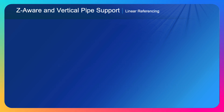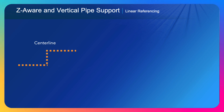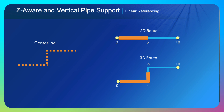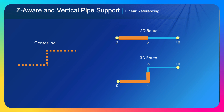We also support the ability to locate measures in Z. In this case, we have a center line that has a vertical segment to it, meaning two of the calibration points along the center line have the exact same X and Y but different Z's and different M's. As we locate events along that line, we do the vertical interpolation between those two bottom and top points. If I'm locating measure five in this example, it's going to be halfway up that vertical piece. From the top down it looks like the same spot, but if we look at X, Y, Z, and M coordinates, we'll see the true 3D representation of those events through the vertical areas.